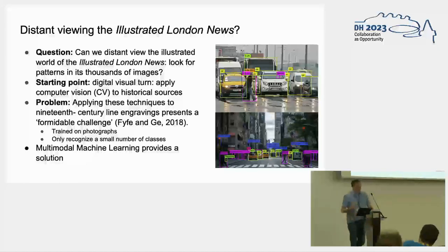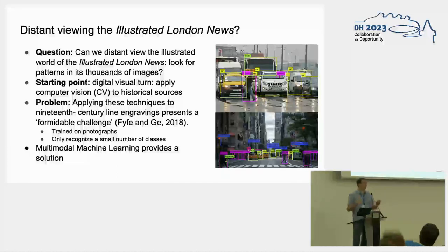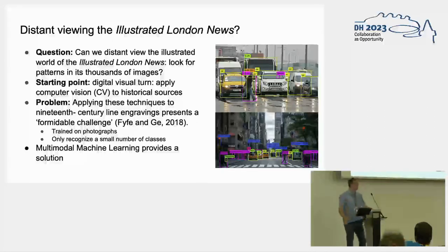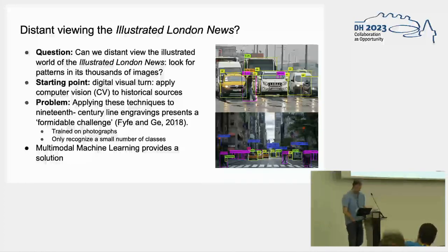The problem is that applying these computer vision models to the illustrations of the Illustrated London News runs into many problems. The most important, as Paul noticed in an article in 2018, is that these models are trained on modern high-definition photographs and they don't perform well on illustrations. Secondly, most of these computer vision models can only recognize a couple of predefined classes — they might identify a chair but not a carriage, which you'd be interested in when studying the 19th century. Here we posit that multimodal machine learning provides a solution.